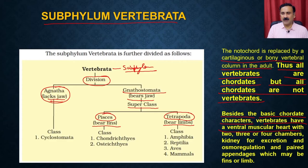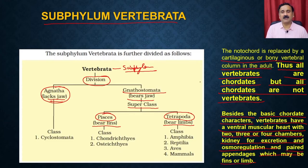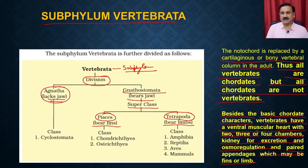Vertebrates have a ventral muscular heart with two, three, or four chambers. They have a well-defined kidney for excretion and osmoregulation, and paired appendages which may be fins or limbs — fins in the case of fishes, or limbs present in tetrapods.